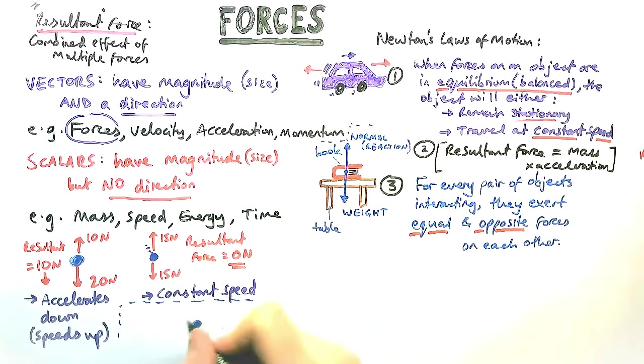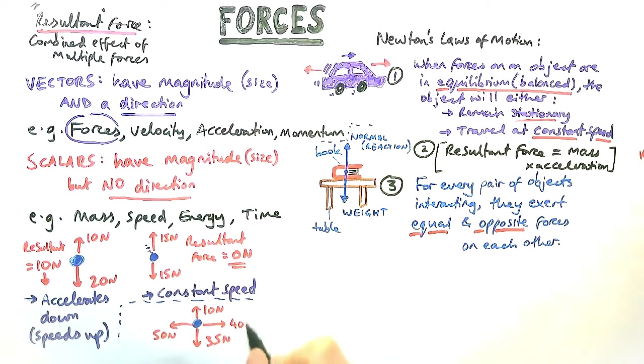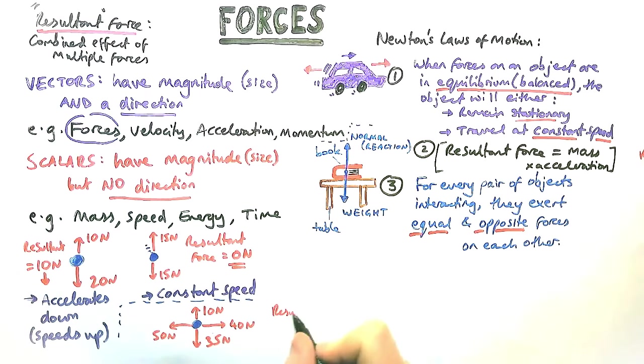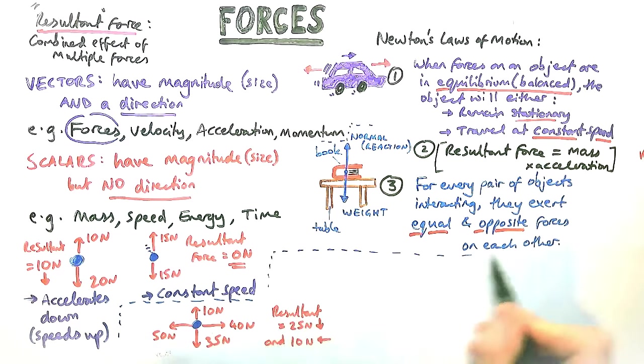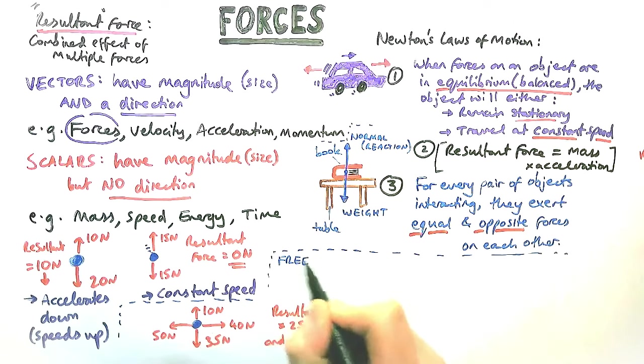Let's look at a slightly trickier example. These examples we're going to look at next, which contain forces not in the same plane, is higher tier only. I've got this example here where I've got 10 up, 35 down, 50 left, 40 right. You've got to resolve each one in the vertical and the horizontal direction. So 35 minus 10 is 25 downwards, and 50 minus 40 is 10 newtons to the left.